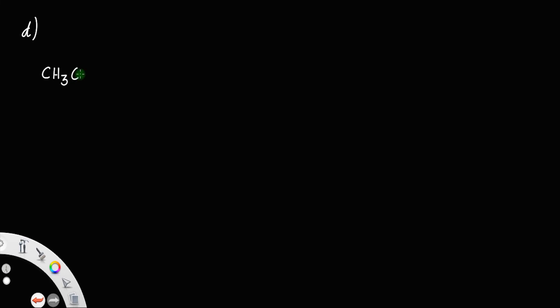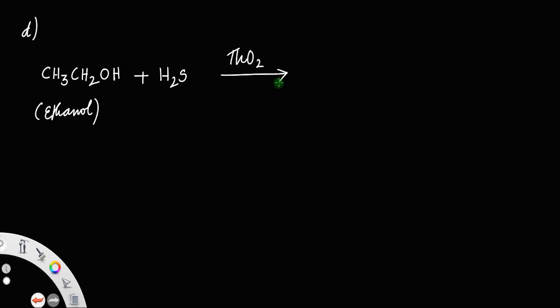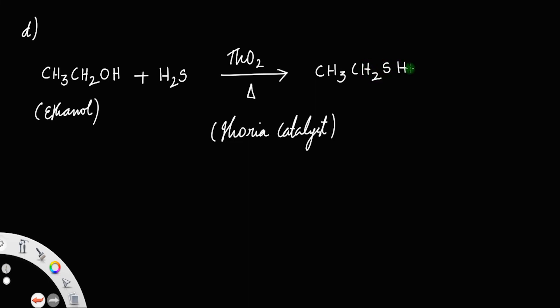In the fourth method, we pass a mixture of alcohol vapor — CH₃CH₂OH, that is ethanol — and hydrogen sulfide over a Thoria catalyst (ThO₂). This gives thiol CH₃CH₂SH, that is ethanethiol, plus water. Remember, the catalyst used must be the Thoria catalyst and the temperature must be 400 degrees Celsius.